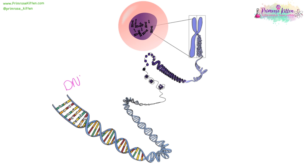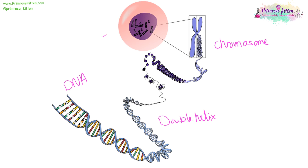DNA is a long strand of deoxyribonucleic acid, made of lots of letters — A's, T's, C's and G's — and these twist round into a double helix. This double helix is still ridiculously long, so it further twists round so that it's in a chromosome. And this chromosome is located in the nucleus of a cell.